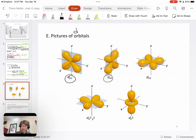Then you've got dx squared minus y squared. That's the one where the lobes are along the x and y axes. And then you have dz squared. dz squared has two lobes along the z axis and a donut shape that is perpendicular to that, or in the xy plane, or centered on the xy plane might be a better way of putting it. And those are our five d orbitals.